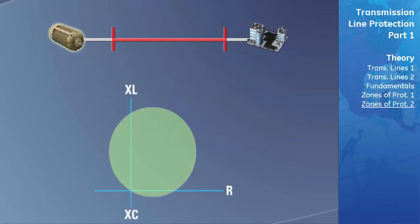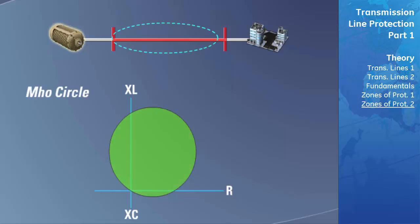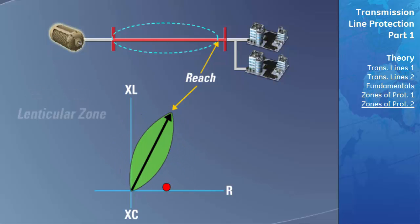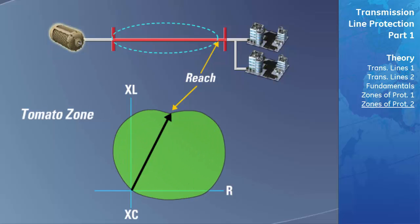Advanced microprocessor-based relays such as the UR D60 give the user the ability to further customize the shape of the Mho circle to meet their protection needs. For example, if this power system has instances where it can be heavily loaded, which may cause the impedance of the line to encroach into the Mho circle, the area of the circle may need to be changed to not include this area in the zone of protection. The Mho zone can be altered to form a lenticular shape which looks at the magnitude of the impedance and only allows tripping when the impedance falls very close to the angle of the transmission line impedance. Therefore, highly loaded systems which cause the impedance point to approach very near the origin will not result in tripping the transmission line. The D60 relay also gives the protection engineer the ability to configure the Mho characteristic into what is known as a tomato-shaped zone. A tomato-shaped Mho characteristic allows for faults that have more of a resistive element to fall into its zone of protection.